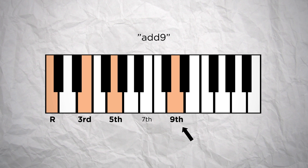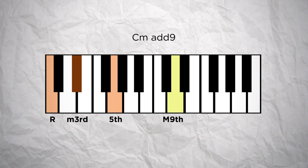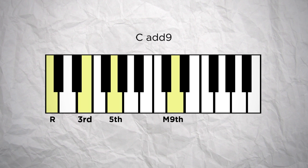Generally this 9th is a major 9th. So we can have for example a C minor add 9, which is a C minor chord plus a major 9th. Or we can have for example a C add 9, which is a C major chord with a major 9th added. You'll see in a minute how you can use these chords as there are only variations of all the 9th chords on my list.